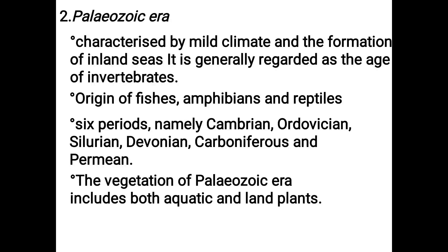The Paleozoic Era consists of 6 periods: Cambrian, Ordovician, Silurian, Devonian, Carboniferous, and Permian. In the Paleozoic Era, there were aquatic plants on land. These aquatic plants are called Nematothalus, Proto-Taxites, and are classified as Thallophytes.